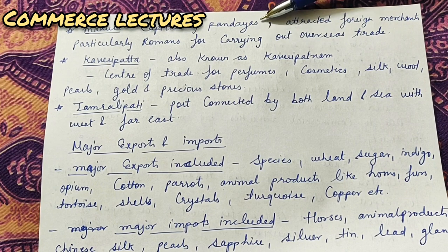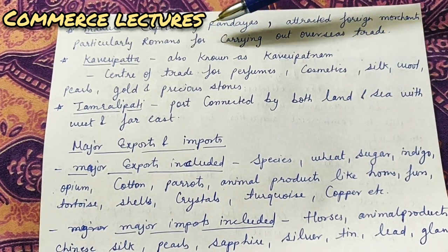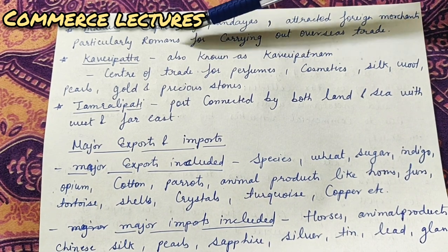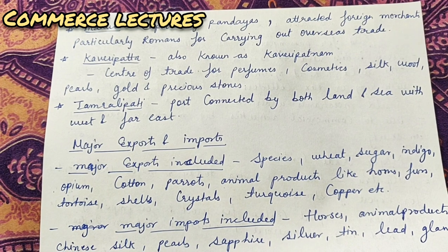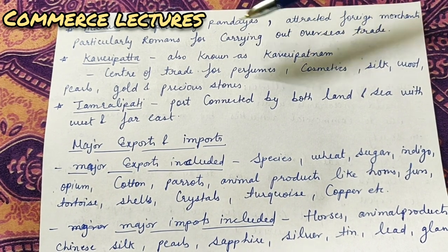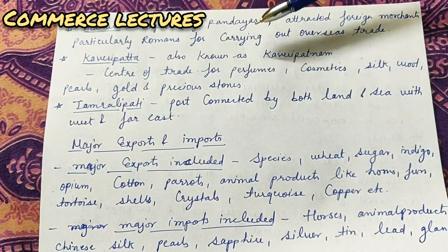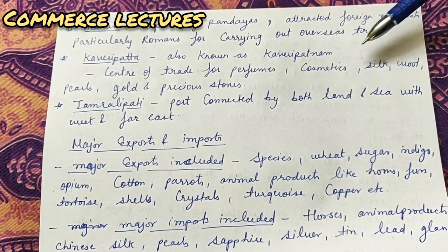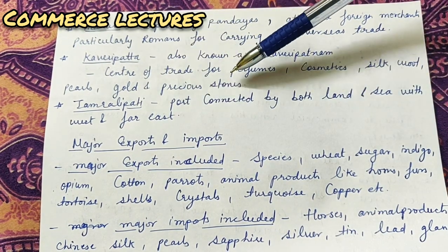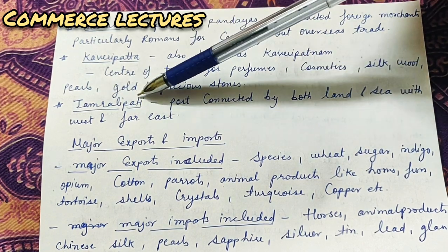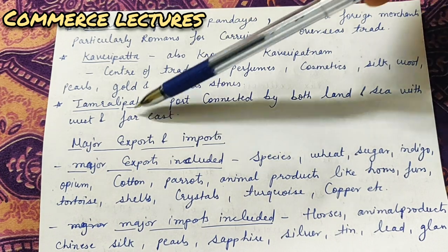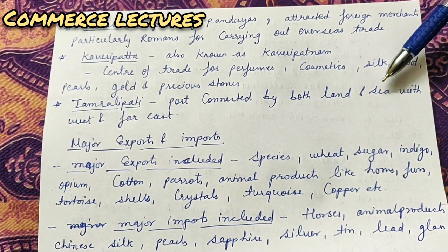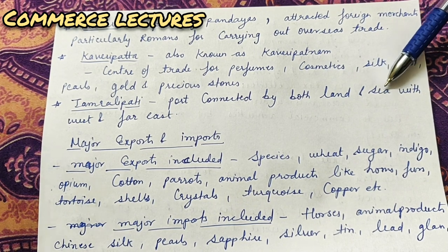Next is Madura, the capital of the Pandyas. It attracted foreign merchants, particularly Romans, for carrying out overseas trade. Many foreign merchants used to come to Madura - mostly Romans came here to trade with many countries. Kaveri Pattan was a center of trade for perfumes, cosmetics, silk, wool, pearls, gold, and precious stones. Tamralipti Port was connected by both land and sea with west and far east - you could do export-import by land as well as by sea.